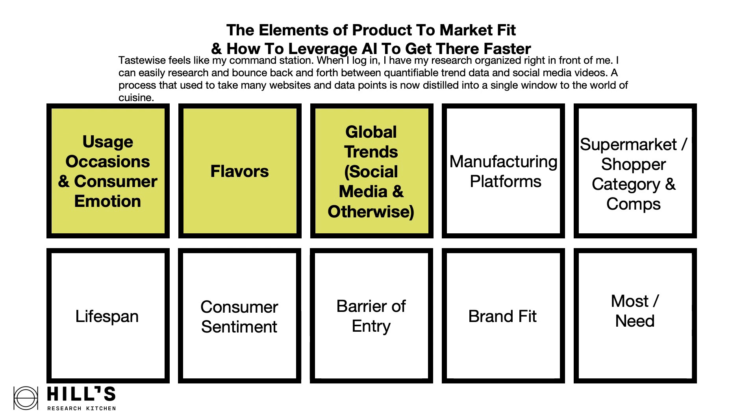How do we use AI as part of this organizational process to get there faster? The first three tiles — usage occasions, different emotions, trending flavors, and global trends — AI speeds us right through. I used to scrape social media all the time, but now I sit down at Tastewise and feel like I'm at the mothership. I've got all these different windows open — I can pull from Pinterest and TikTok, look at data spikes, zoom in on different regions — so much faster than digging through my Google search history.